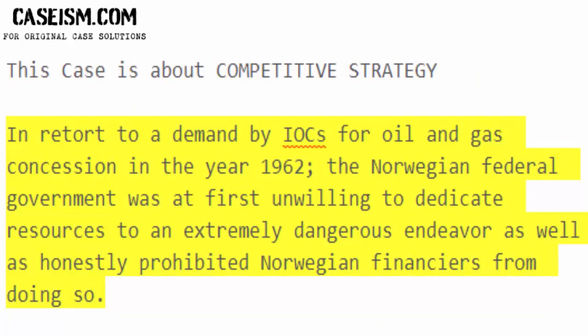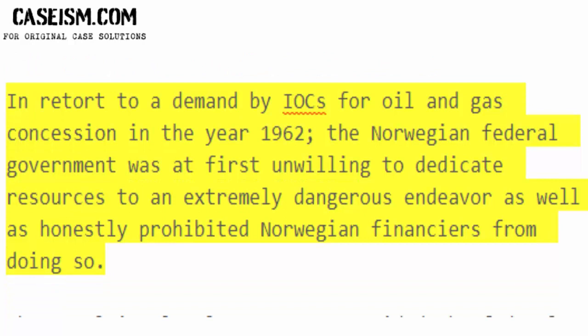In response to a demand by IOCs for oil and gas concessions in the year 1962, the Norwegian federal government was at first unwilling to dedicate resources to an extremely dangerous endeavor, and also prohibited Norwegian financiers from doing so.